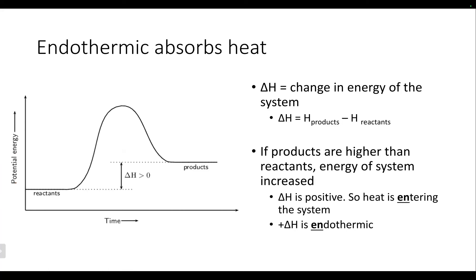With endothermic reactions, we see just the opposite. If we want to make up numbers — 20 and 10 again — but in this case, since we're finishing at 20, we would have 20 minus 10, giving us a positive delta H with these endothermic reactions. That's because the energy we're representing with these diagrams is the energy of the system. If the products are finishing at a higher spot than the reactants, that means they had to absorb energy throughout the reaction.